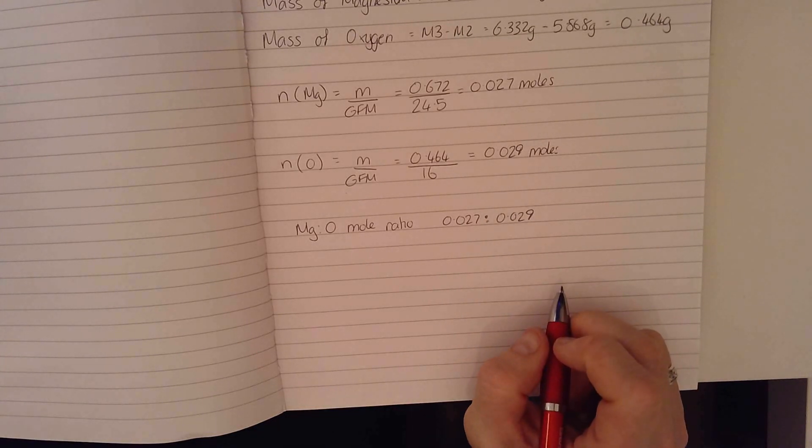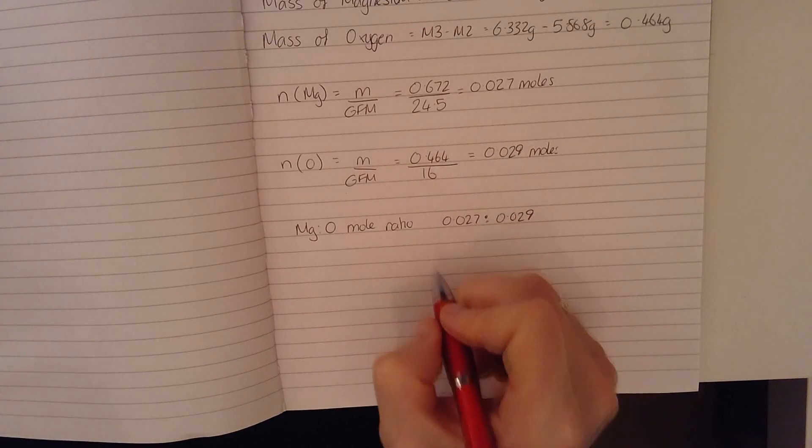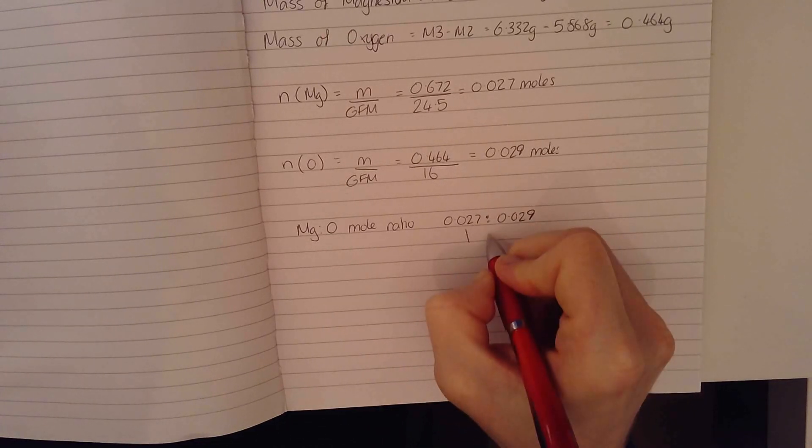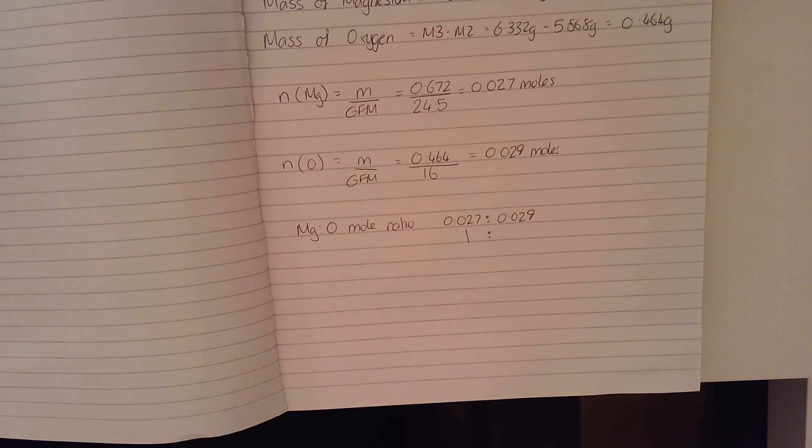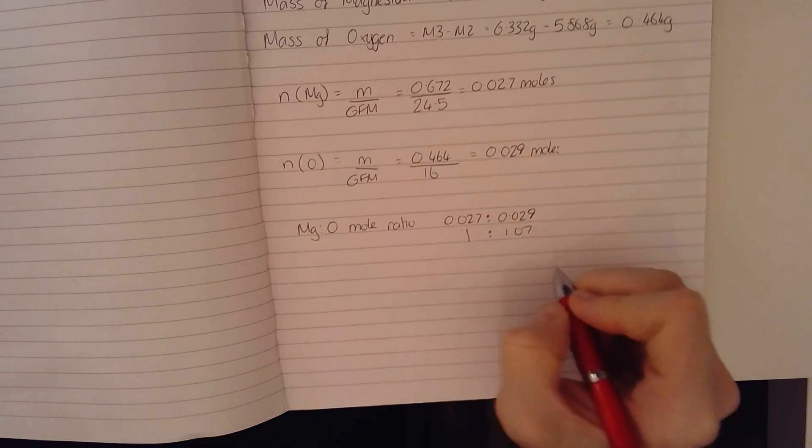Now to find the simplest mole ratio, I want to divide by the smallest. So the smallest out of those two numbers is the 0.027. So 0.027 divided by 0.027 is going to be 1. And if I put 0.029 divided by 0.027 into my calculator, it comes out at 1.07. So we can round that down to 1.